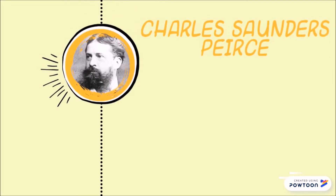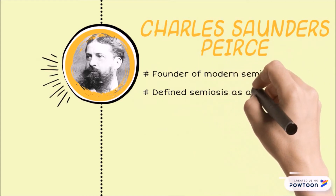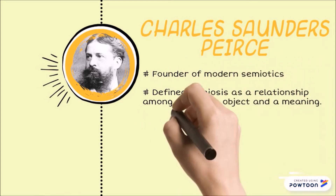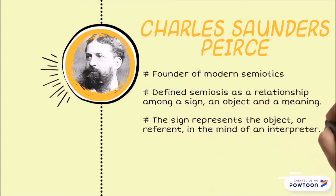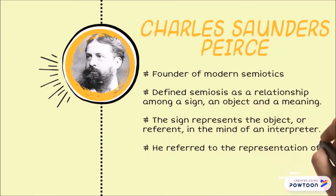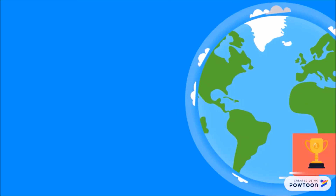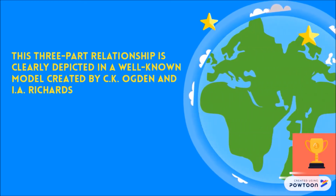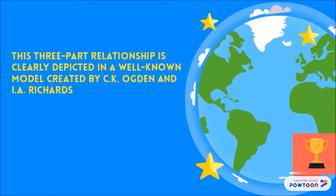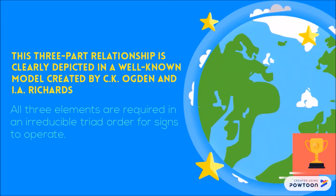He is the founder of modern semiotics. He defines semiosis as a relationship among a sign, an object and a meaning. The sign represents the object or reference in the mind of an interpreter. He referred to the representation of an object by a sign as the interpretant. This three-part relationship is clearly depicted in a well-known model. All three elements are required in an irreducible triad for signs to operate.